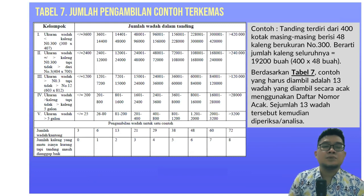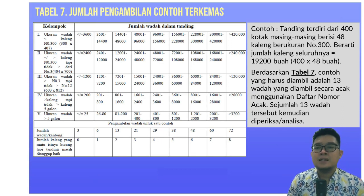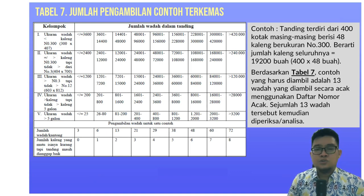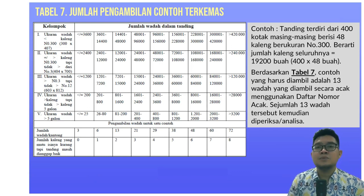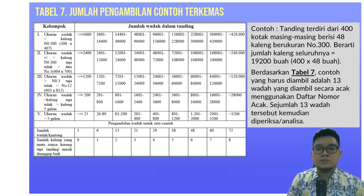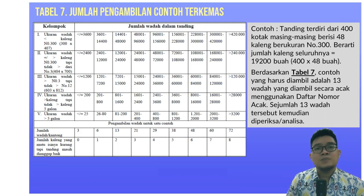Berikut adalah tabel 7 tentang jumlah pengambilan contoh yang terkemas. Contoh kasus: apabila pada suatu tanding berisi 400 kotak yang masing-masing terdapat 48 kaleng berukuran nomor 300, maka jumlah seluruh kaleng yaitu 400 × 48 = 19.200 buah. Angka ini kemudian dilihat pada tabel 7 untuk kaleng berukuran 300. Berdasarkan tabel 7, maka contoh yang harus diambil adalah sebanyak 13 wadah, yang diambil secara acak menggunakan daftar nomor acak.